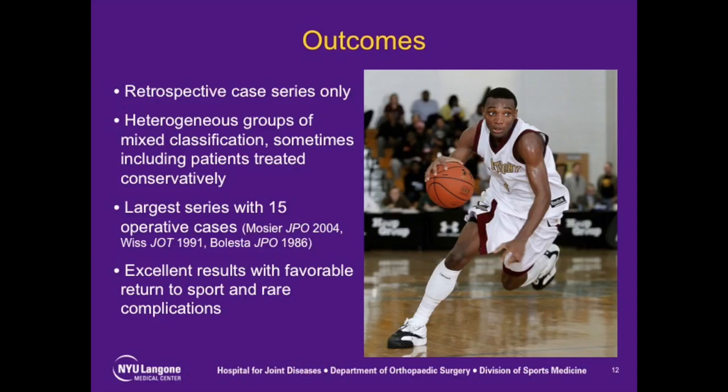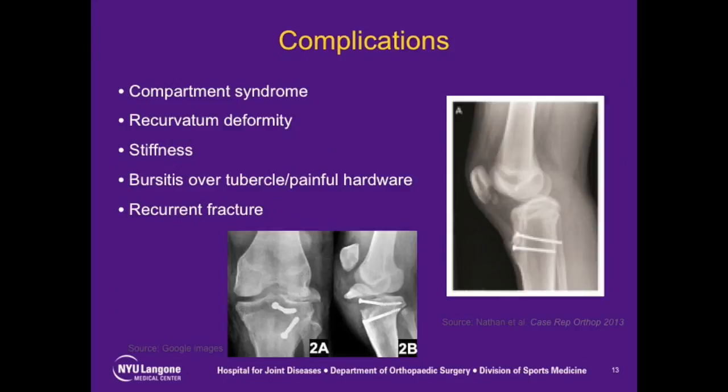There is little in the orthopedic literature regarding the outcomes following treatment of tibial tubercle avulsion fractures. Most studies are small, retrospective case series. The available data indicates that excellent results are typical, with a high percentage return to athletics and minimal long-term sequelae. Potential complications include the development of compartment syndrome associated with the injury acutely, post-treatment recurvatum deformity, postoperative knee stiffness, hardware-related complaints including painful screw heads and bursitis over the tubercle, and recurrent fracture.